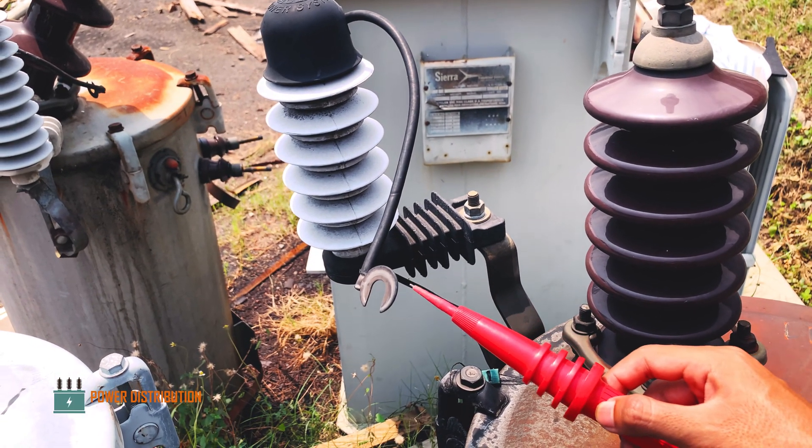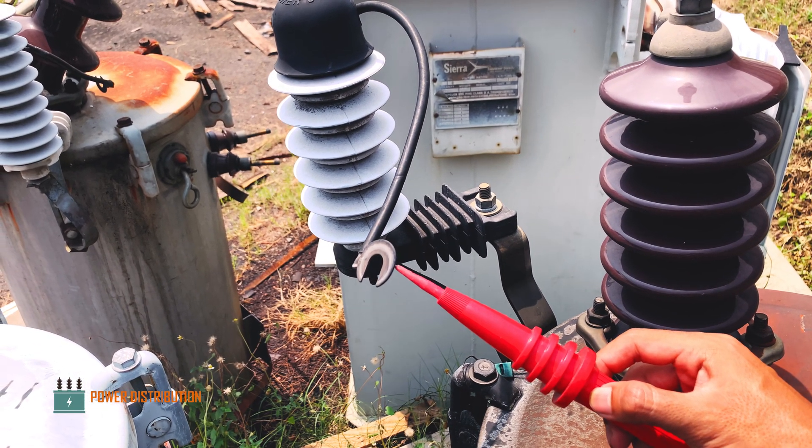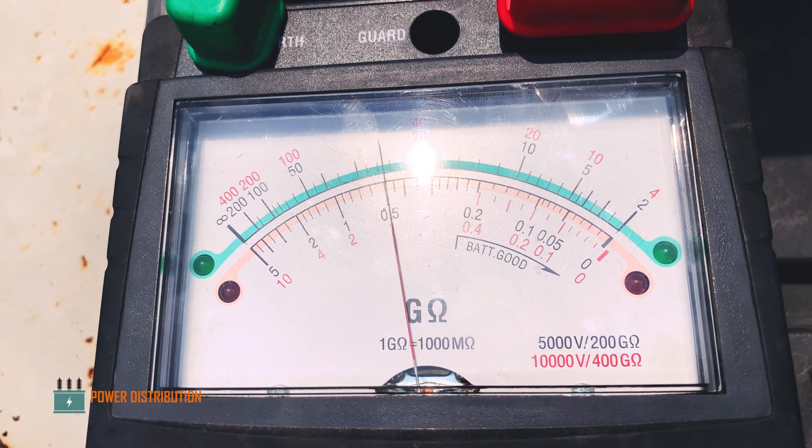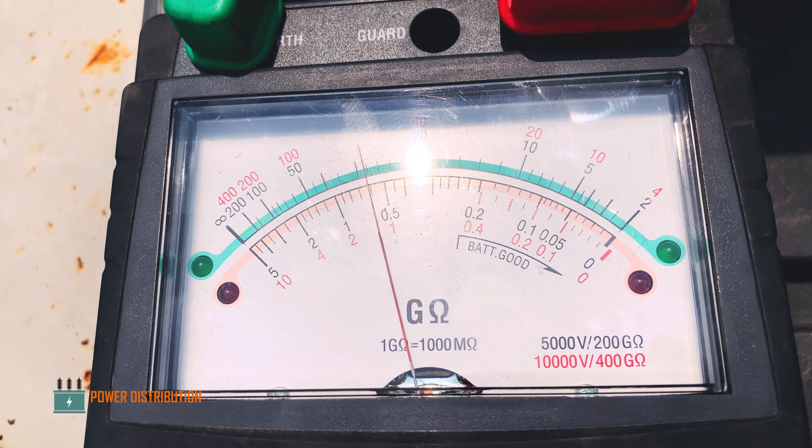In addition, we measure the resistance of the arrestors. As you can see, it shows some reading with a green light, which means the arrestor is intact.